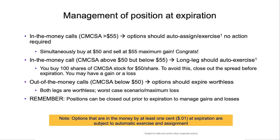Here's an easy one: what if both options are out of the money — Comcast is below $50? This is really the worst case scenario because at expiration there's no time value and no intrinsic value. The long leg is worth nothing. The short leg is worth nothing. Therefore, both options should expire worthless. It's the worst case scenario — it's your maximum loss, $237-plus, done.